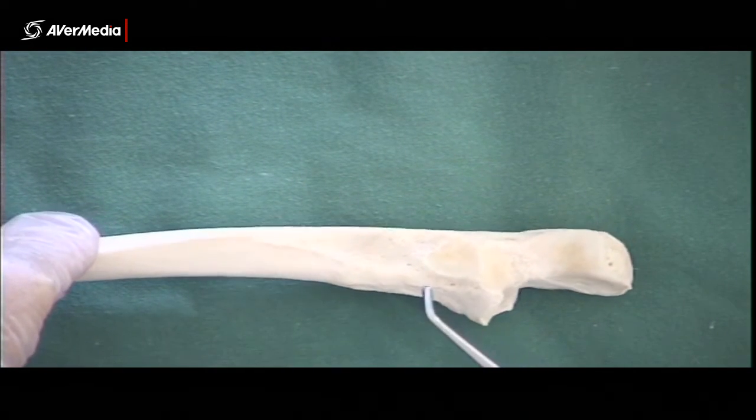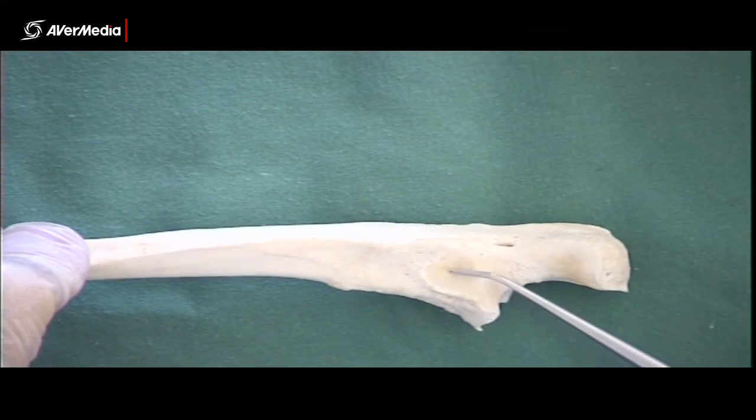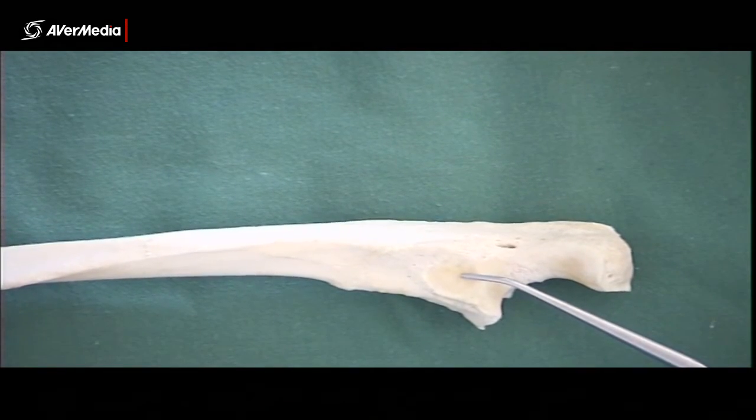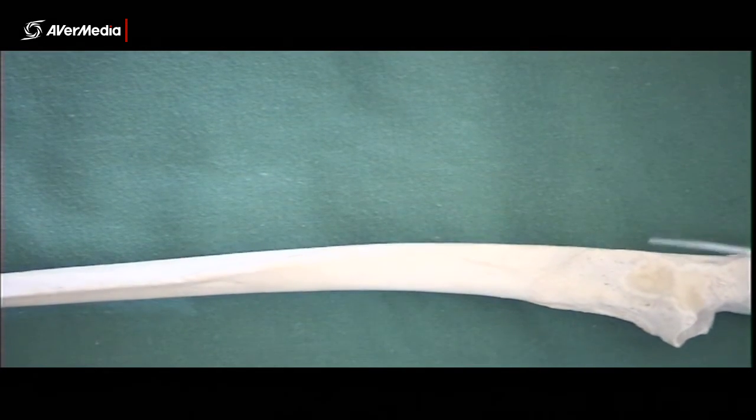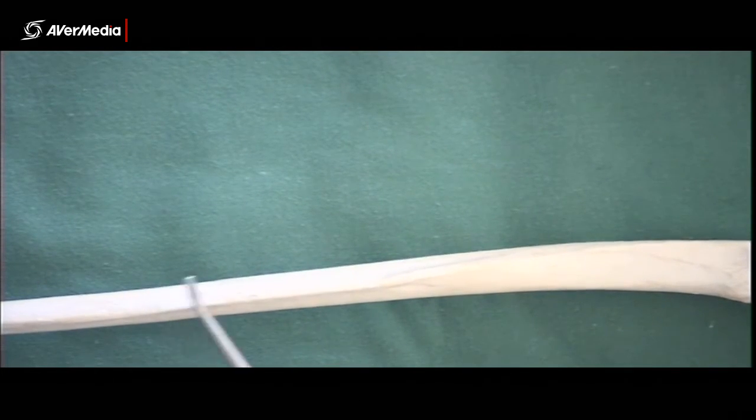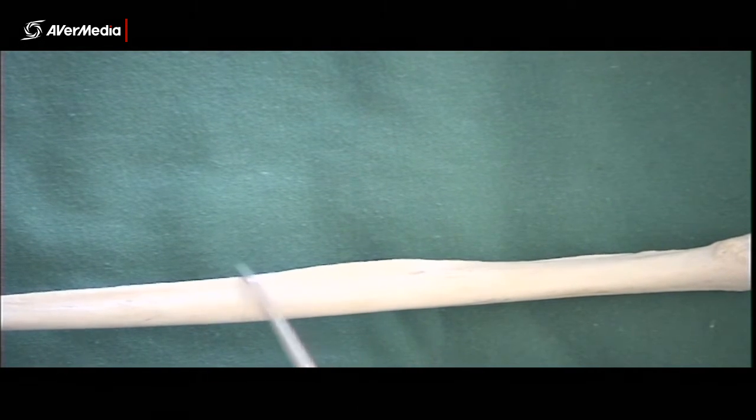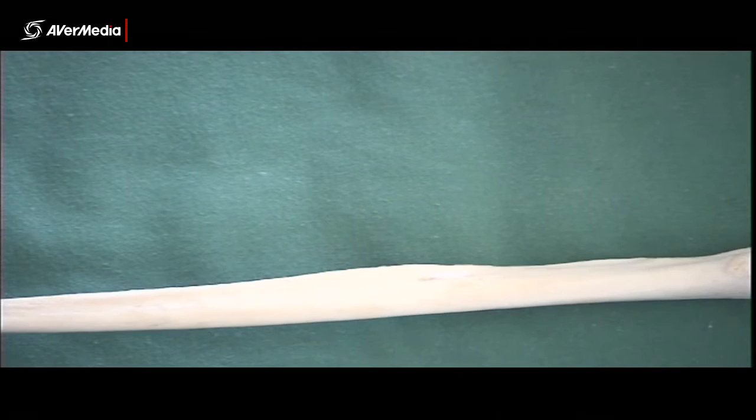And just then on the lateral aspect of the coronoid process, then we've got a little radial notch there for the head of the radius to articulate with. And distally, but in line with where the radial notch is, again, pointing in a lateral direction, we have the interosseous border. And that's quite sharp, it's the sharpest border there on the ulna, so you kind of can't miss it. The interosseous membrane will be attaching into that. So that's just a few structures on the proximal ulna.